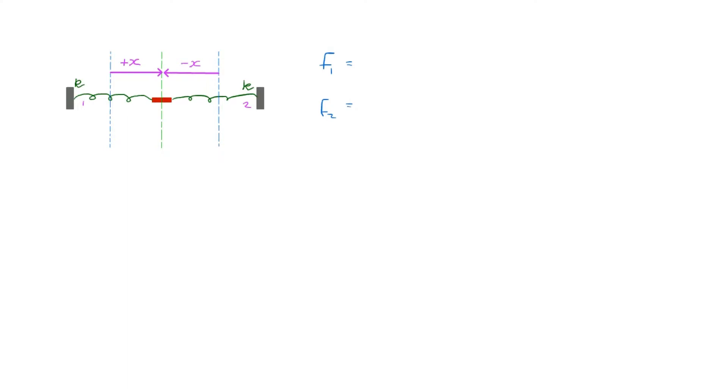The force due to spring one, we just have to apply Hooke's Law. Remember, F equals minus kx, so minus k times plus x. That's obviously minus kx, and the minus means that the force is acting in the negative direction towards the left.